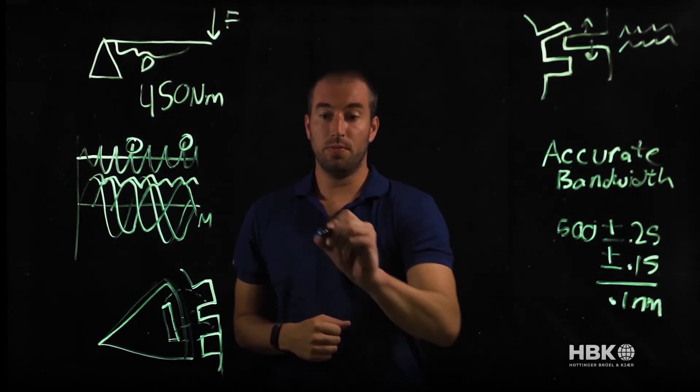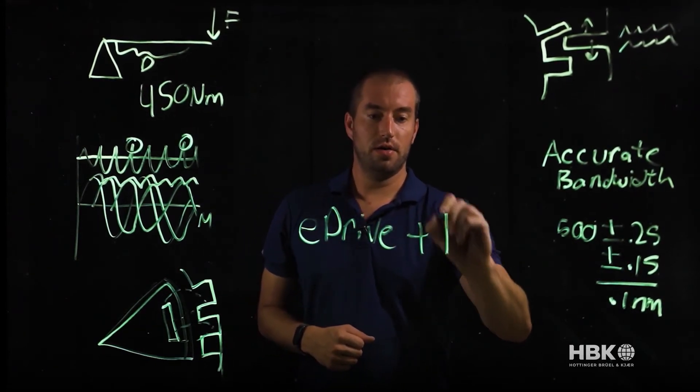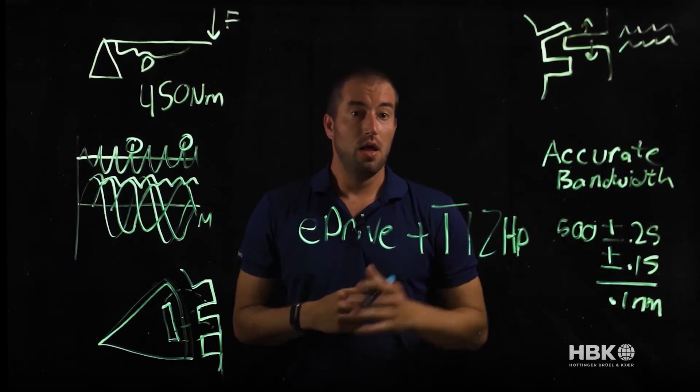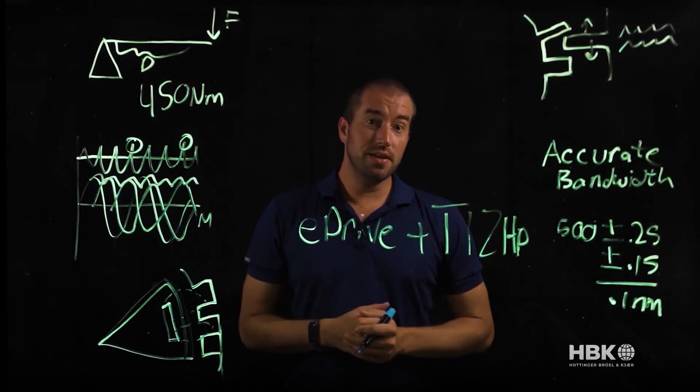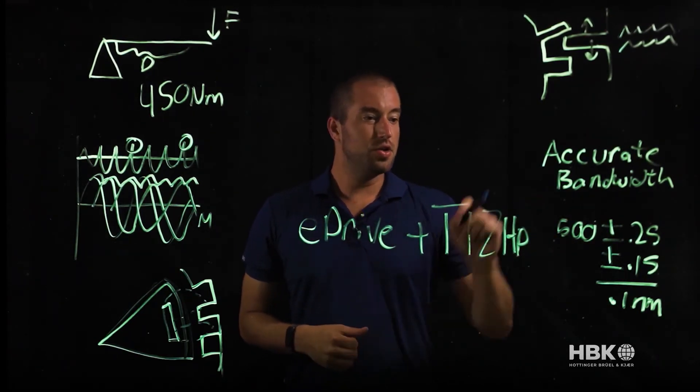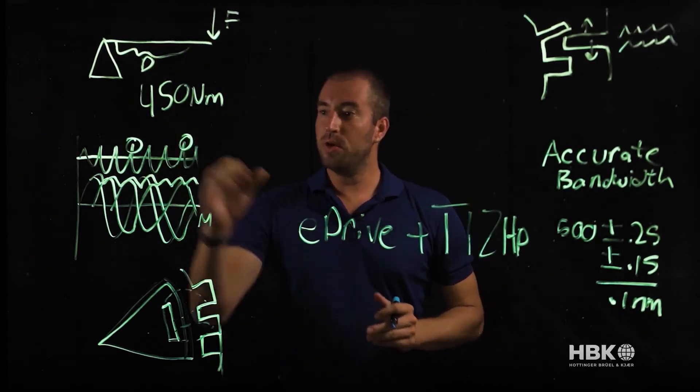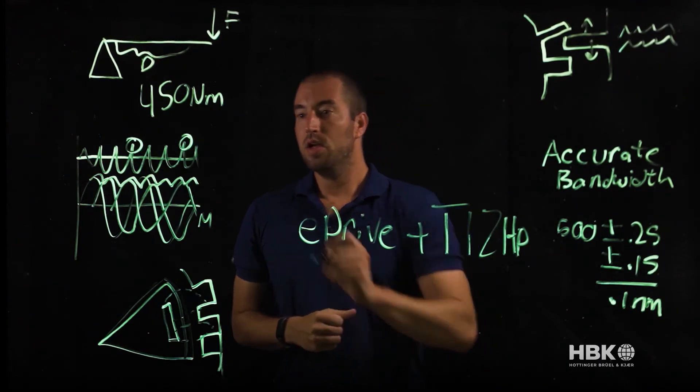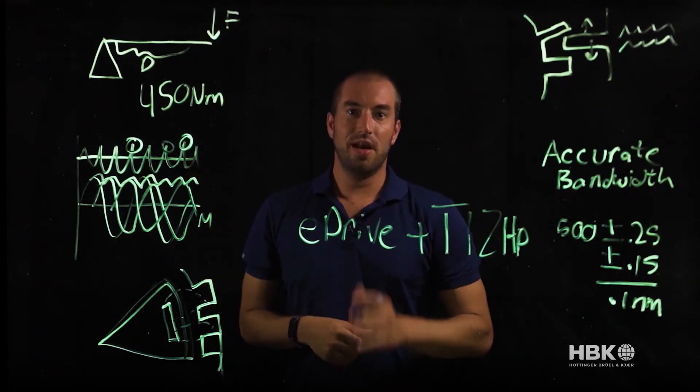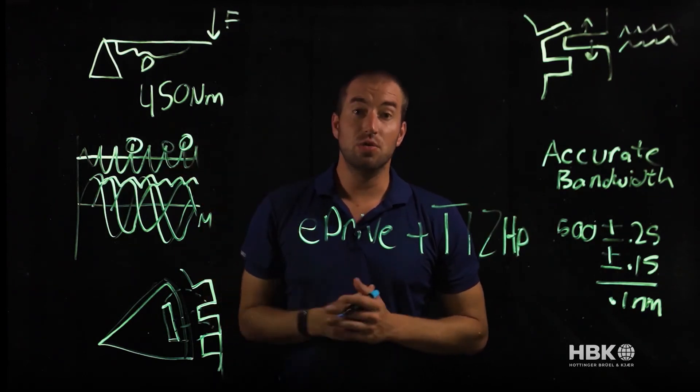HBK has a great solution for torque ripple with our eDrive power analyzer and our T12 HP torque sensor. The T12 HP torque sensor has the accuracy to measure these very fine details coming in at 0.02 percent, so you can really look at those small details and understand their changes. It also has six kilohertz of bandwidth, so you can look and see the frequency and amplitude changes of these signals and understand where they're happening and what's causing them with that accuracy so that you can trust what you're measuring.